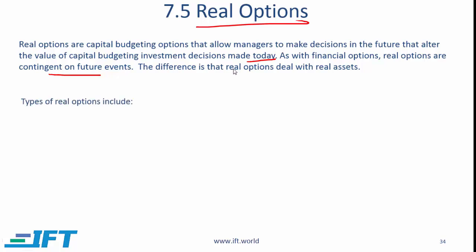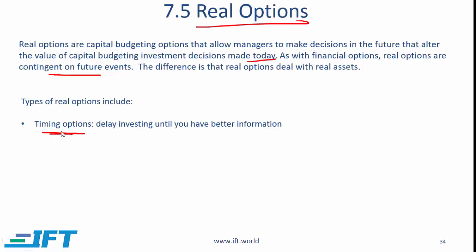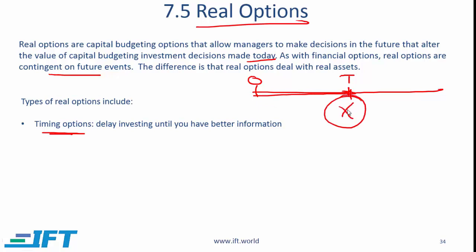There are several different types of real options and we will talk about them at a high level, then look at some examples from the curriculum. One option is a timing option, where you have the option to wait — say six months — in order to gather more information and make a more informed decision as to whether or not to spend money on a large plant. You are here at point zero and if you have the option to wait until time t and then start your project, that is valuable because it gives you the option to collect information and decide whether or not to engage in the project.